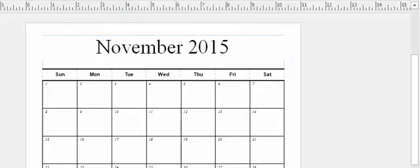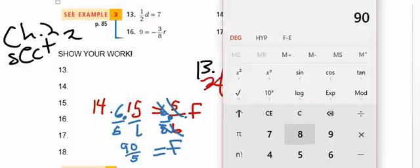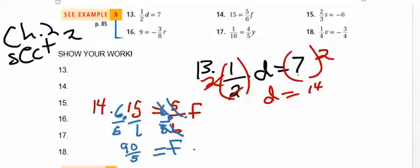And 90 divided by 5 is 18. So that means that 18 equals F.